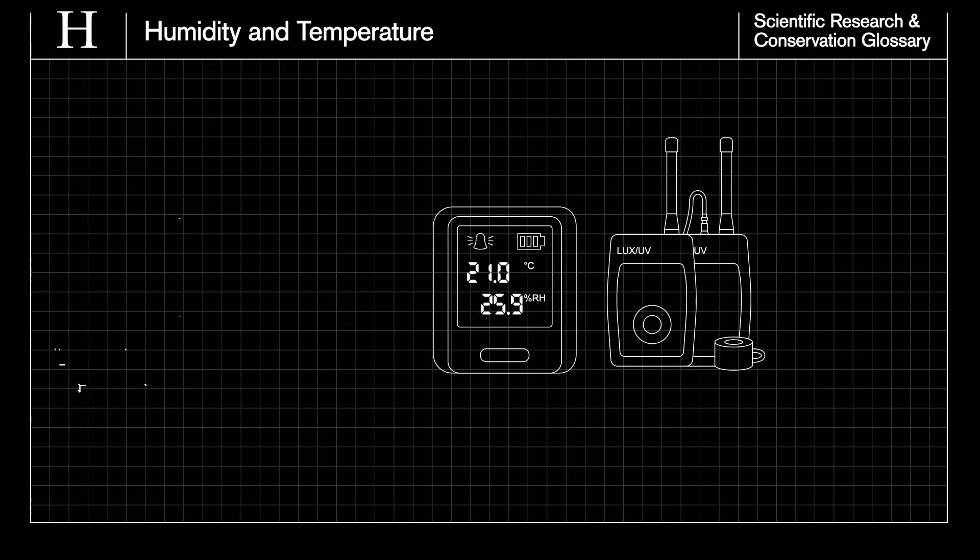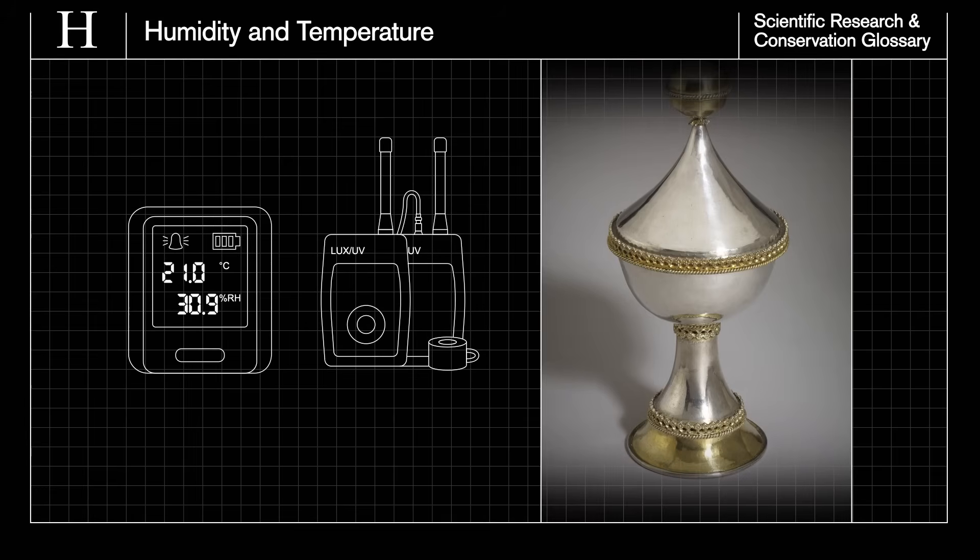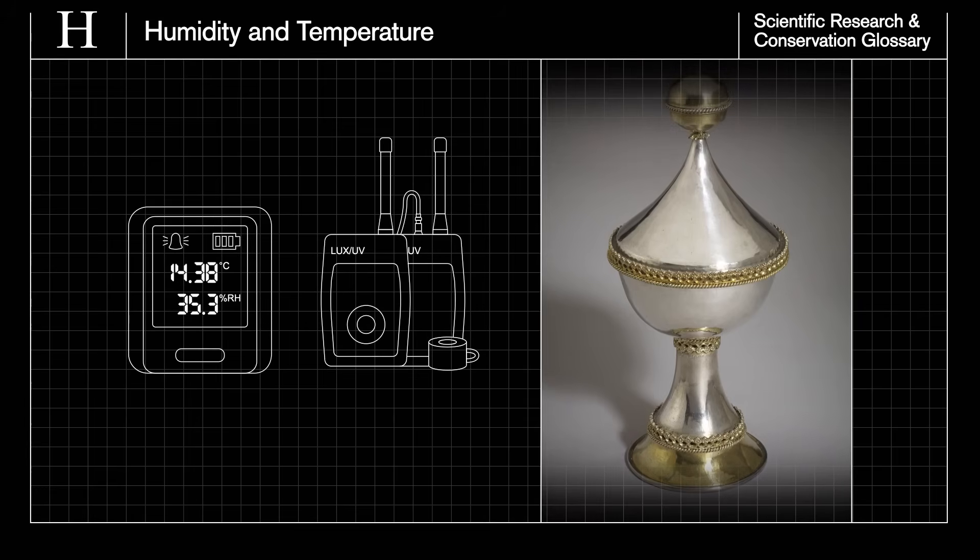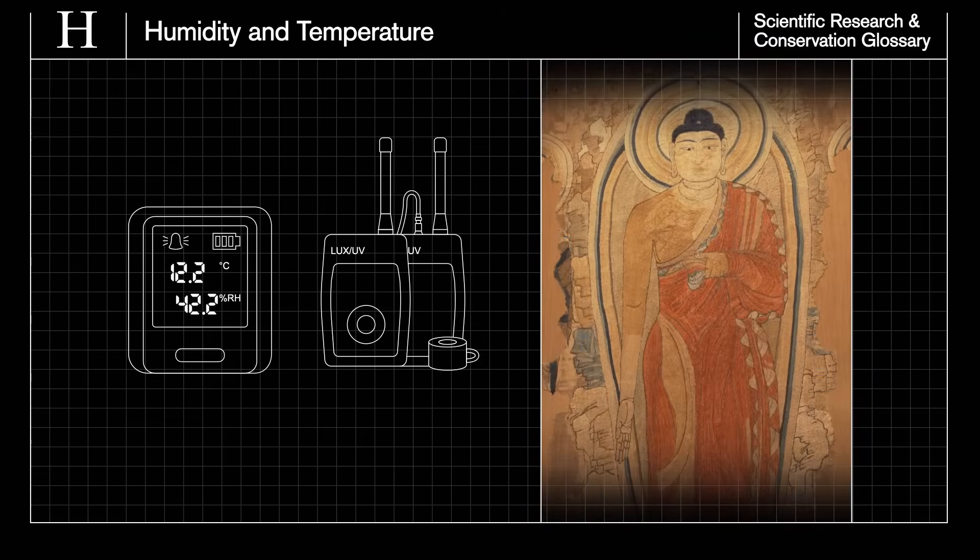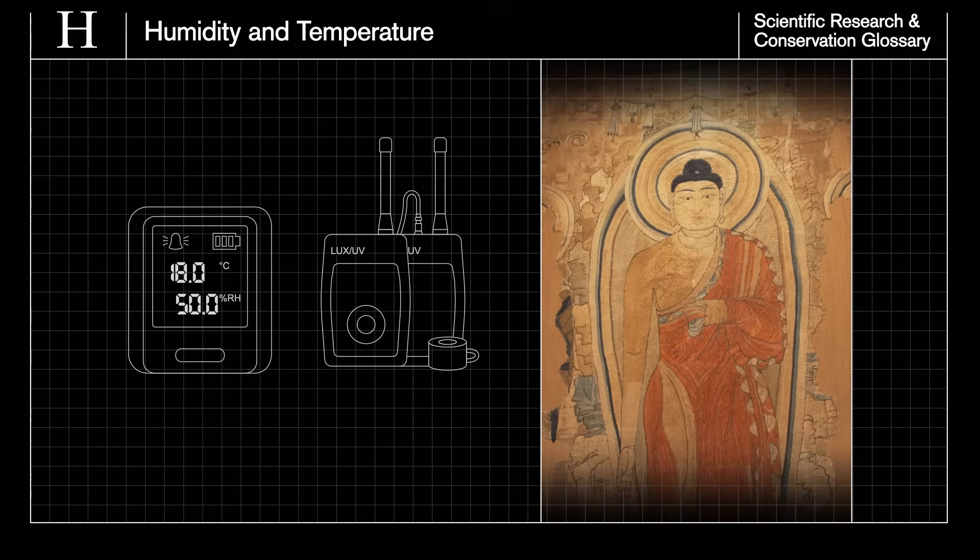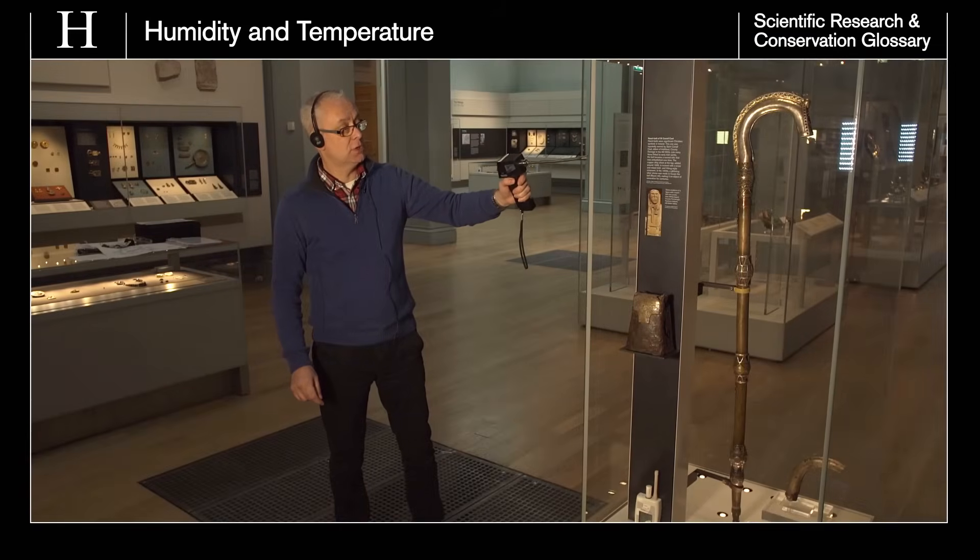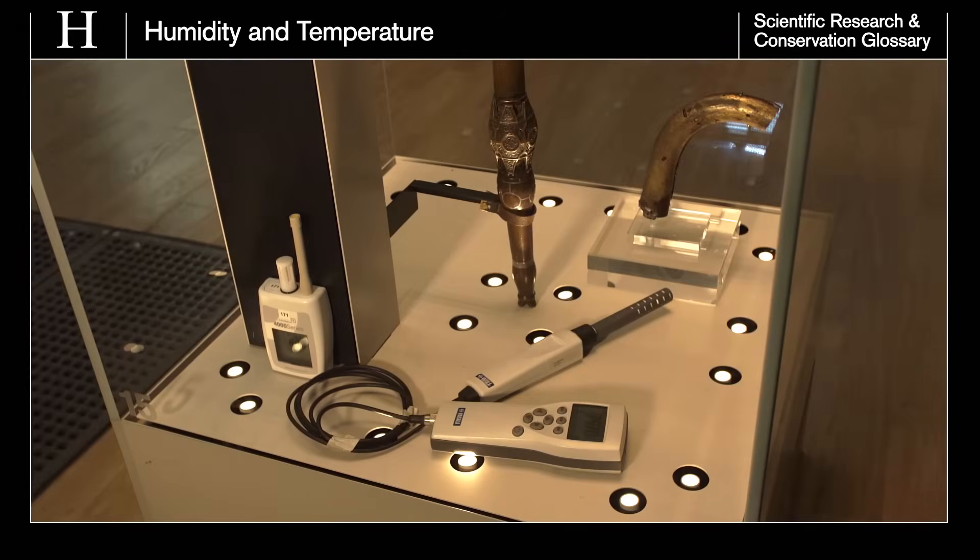Objects need different humidity levels depending on their composition. Metal objects, for example, need lower relative humidity to prevent corrosion. And organic objects need higher humidity to prevent them from becoming brittle. Preventive conservators can help provide suitable environments by creating display cases that have their own microclimates.